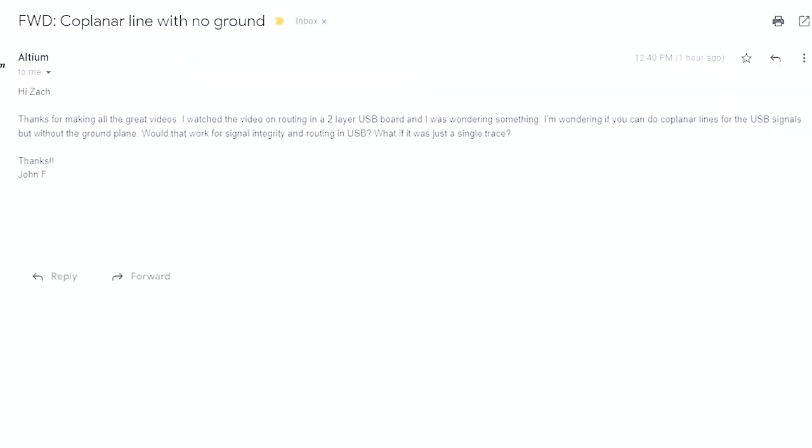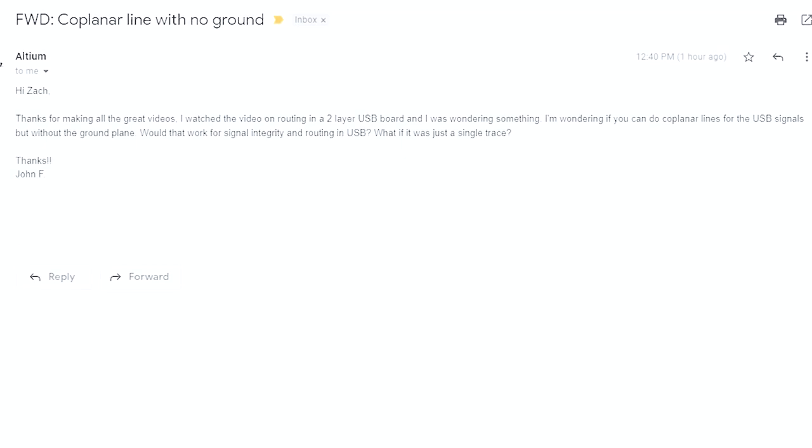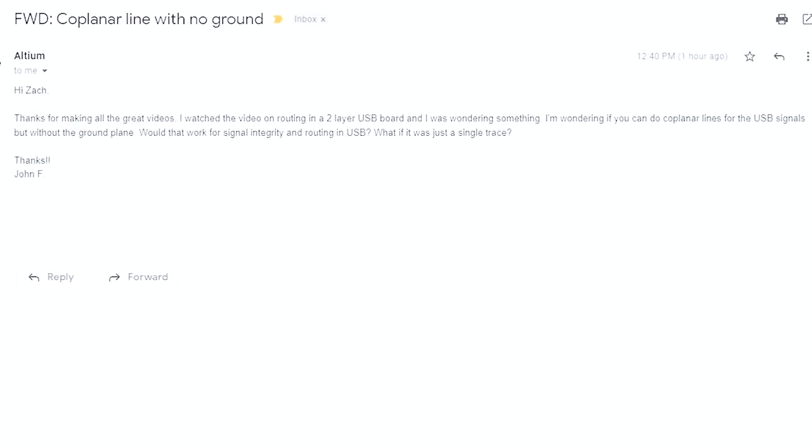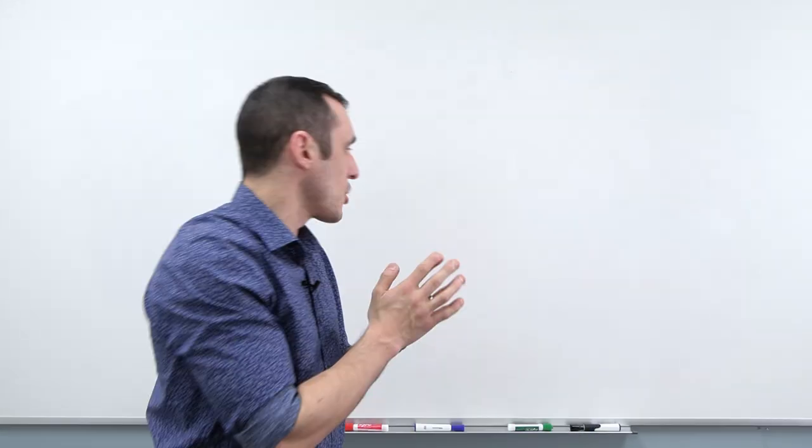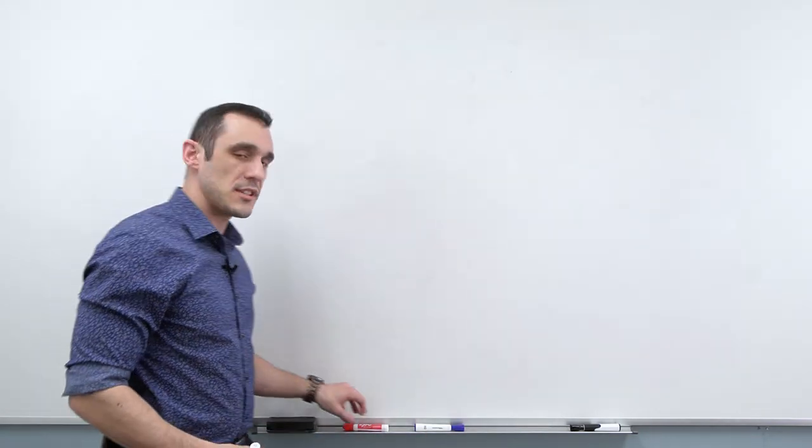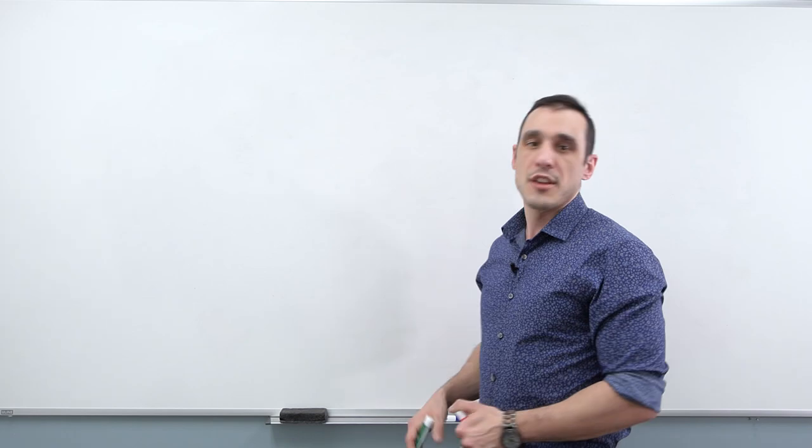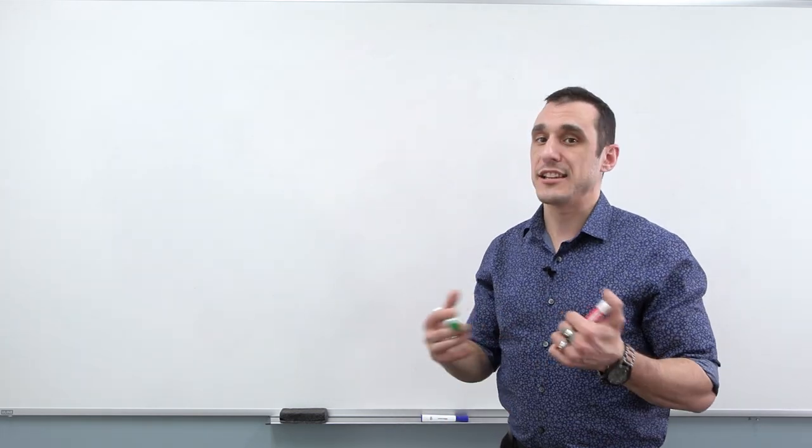First we're going to take a look at a viewer question from John about coplanar lines. John writes, hi Zach, thanks for making all the great videos. I watched the video on routing in a two layer USB board and I was wondering something. I'm wondering if you can do coplanar lines for the USB signals, but without the ground plane. Would that work for signal integrity and routing in USB? What if it was just a single trace? This is a great question because it relates to what the return paths are in your coplanar PCB.